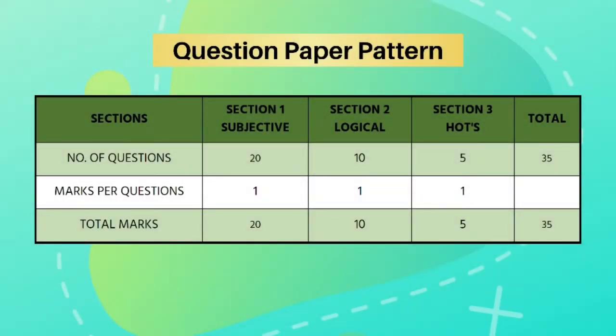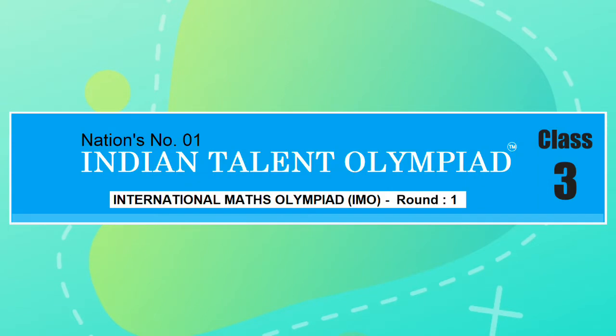The question paper consists of 35 questions in which 20 questions are subjective, 10 questions are logical reasoning, and 5 questions are high order thinking. These 35 question exam holds 35 marks. So let us begin. You can write the answers one by one on a blank piece of paper and then compare them with the answer key at the end of the question paper.